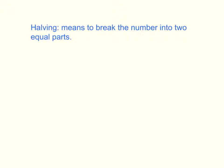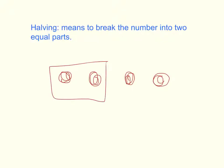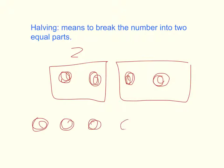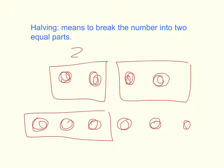Now let's talk about halving. Halving is the opposite of doubling, and halving means to break the number into two equal parts — or it would be the two numbers you would add together to get its double. So if I have the number 4, here are my 4 dots. If I were to half the number, I would break it into two equal parts. So half of 4 would be 2. If I needed to half the number 6, I would break 6 into two parts, and half of 6 would be 3.